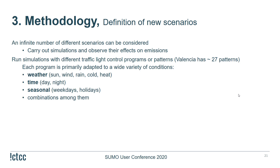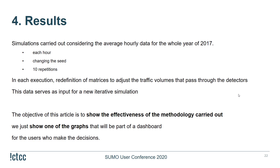Finally, the definition of new scenarios can be considered to simulate and observe effects on emissions. For instance, running simulations with different traffic light control programs — Valencia has approximately 27 patterns, each primarily adapted to a wide variety of conditions like weather, time, seasonal factors, and combinations thereof. Simulations were carried out using average daily data for the whole year 2017, for each hour, with up to 10 repetitions per execution. The redefined matrices adjust traffic volumes to match detector data and serve as input for subsequent iterative simulations.